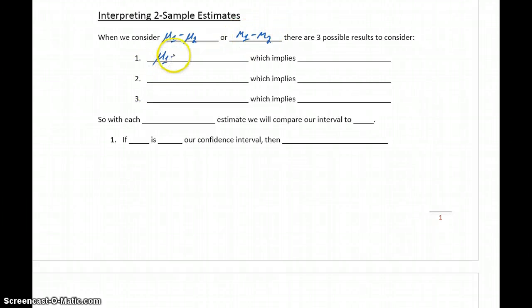Our first possibility is that μ₁ minus μ₂ is equal to zero. So if we subtract those two values we get zero, which implies the two population means are exactly equal to each other. If the difference between those is equal to zero, it means our means or medians are equal.